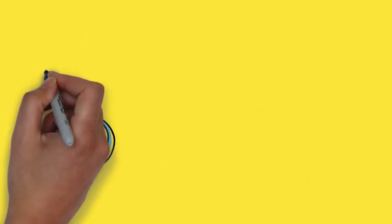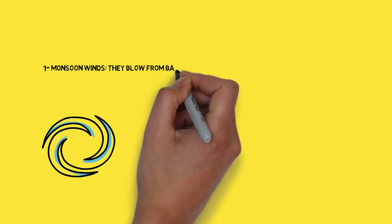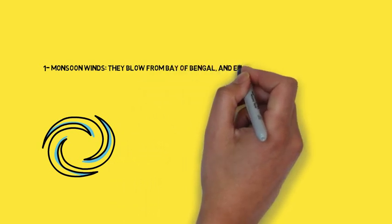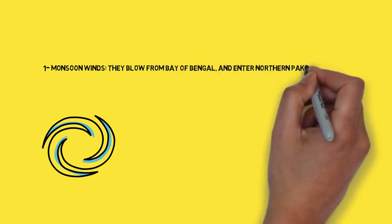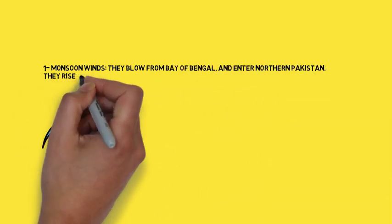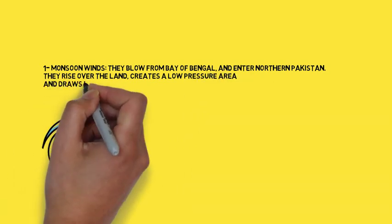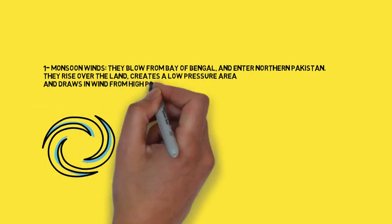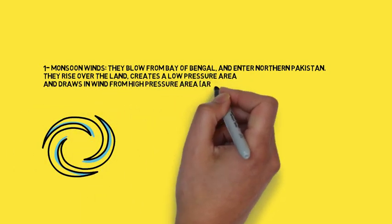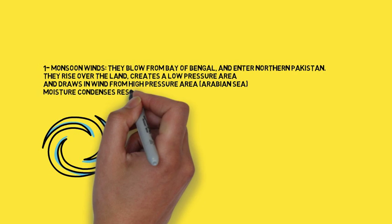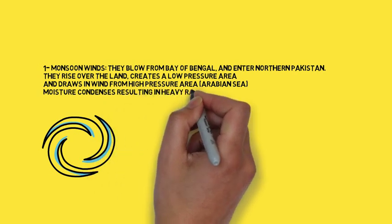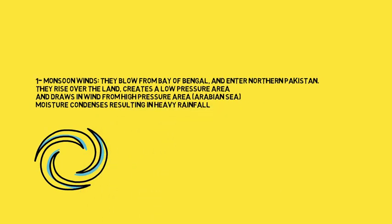The number one source is monsoon winds. They blow from the Bay of Bengal and enter the northern mountains of Pakistan, specifically the Himalayas. The rise over the land creates a low pressure area and draws in wind from the high pressure area. Moisture condenses, resulting in heavy rainfall.